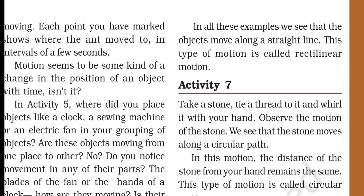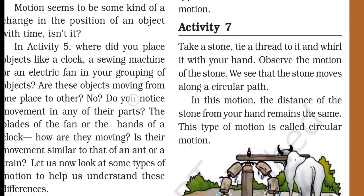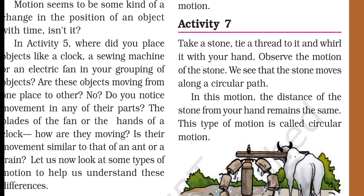Now Activity 7: take a stone, tie a thread to it, and whirl it with your hand. Observe the motion of the stone. We see that the stone moves along a circular path. In this motion, the distance of the stone from your hand remains the same. This type of motion is called circular motion.